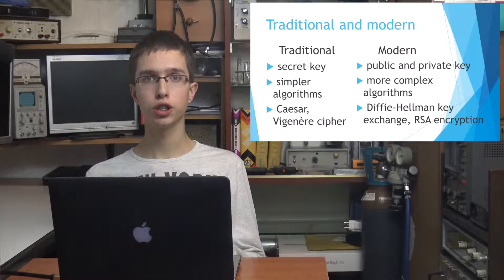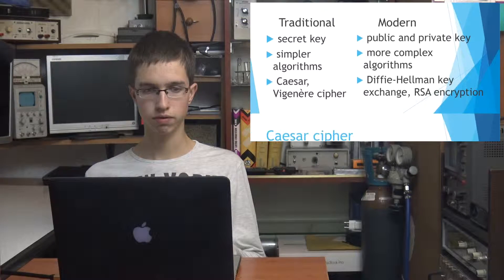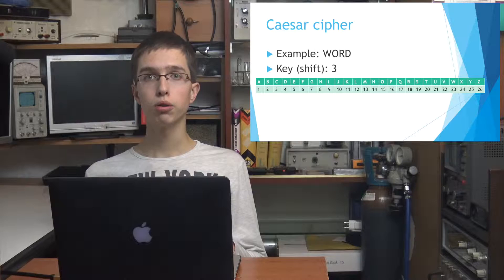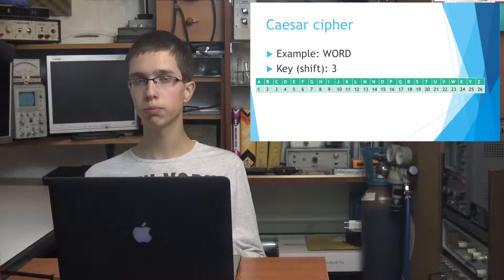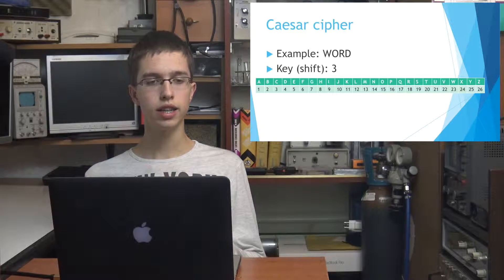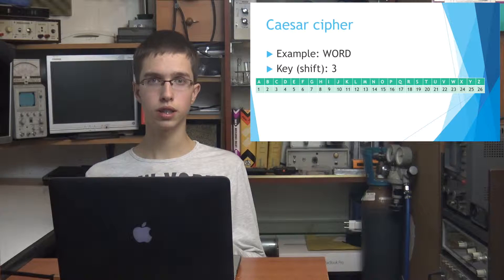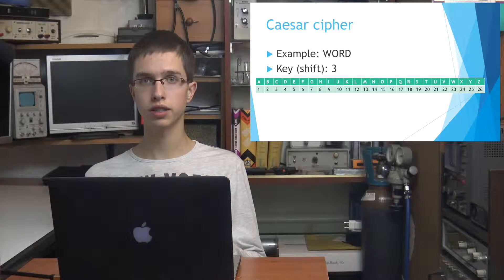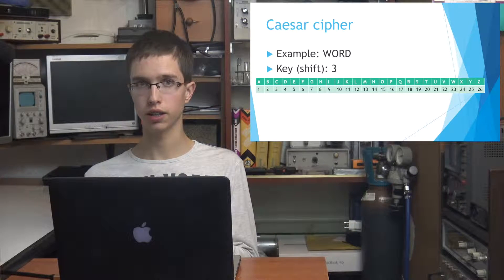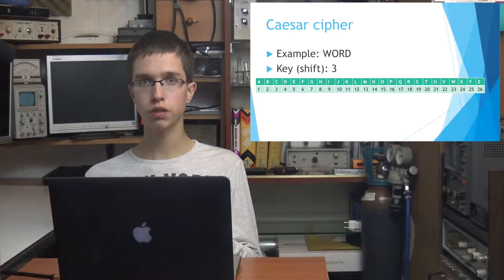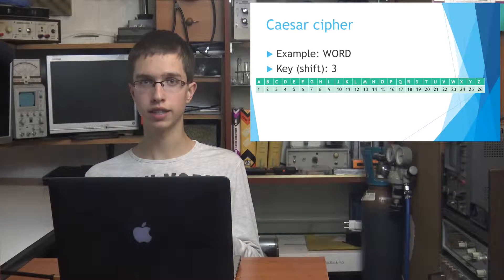First, we are going to talk about traditional cryptographic algorithms. There are more types of traditional cryptosystems and we are going to give two basic types: monalphabetic and polyalphabetic. Let's take an example of a monalphabetic cryptosystem. One of the first cryptosystems was the so-called Caesar cipher. It was a cipher which works on the principle of letter shifting. We take a message and each letter in the message is shifted by a predetermined number of places, which is determined as the key.